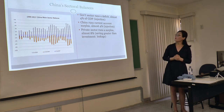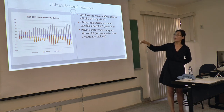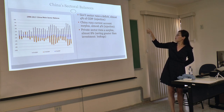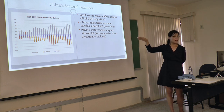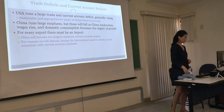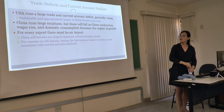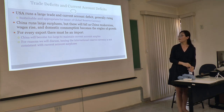This balance shows the Chinese sectoral mirror: the government sector runs a small surplus of almost 4%, and the current account runs a surplus of about 4%, so the total private sector runs a surplus of almost 8%. For the US, it runs a large trade current account deficit, generally rising, which is sustainable and appropriate for the issuer of the global reserve currency. Now we're going to talk about the global reserve currency.